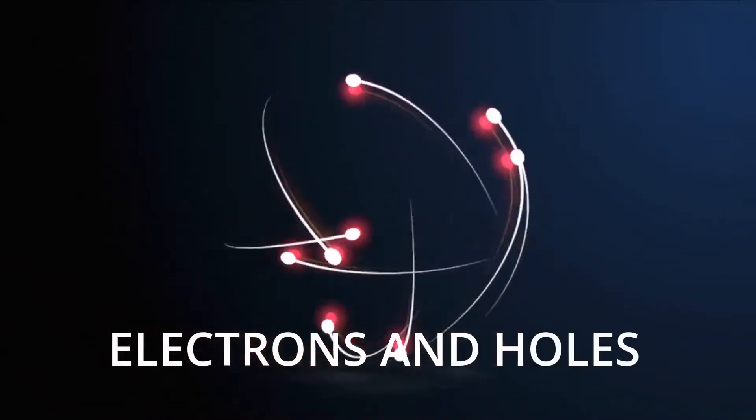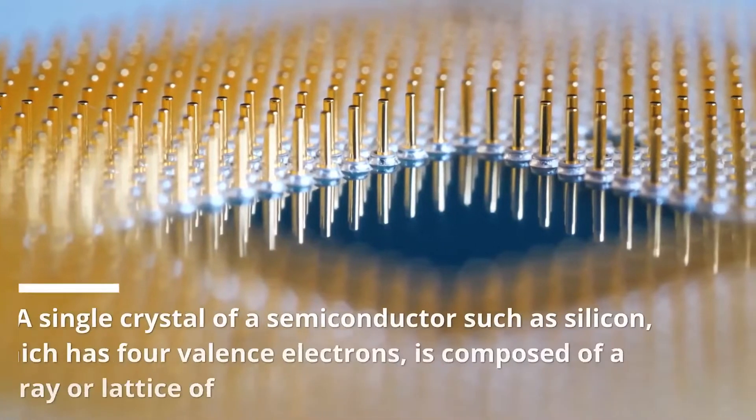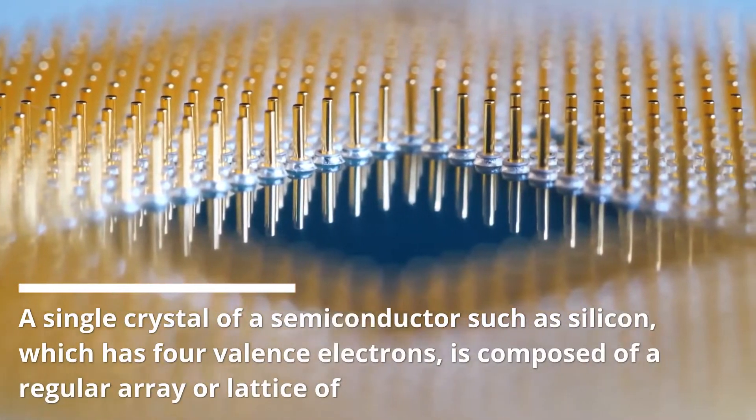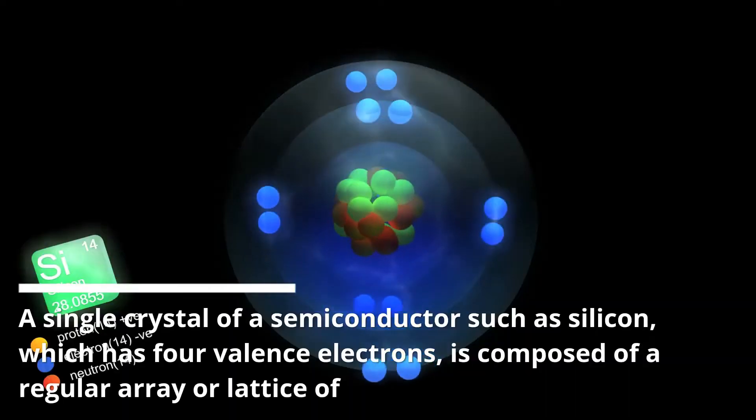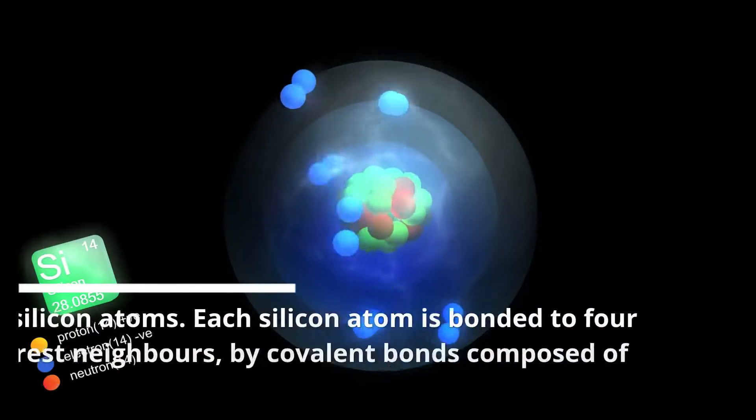Electrons and Holes. A single crystal of a semiconductor such as silicon, which has four valence electrons, is composed of a regular array or lattice of silicon atoms.